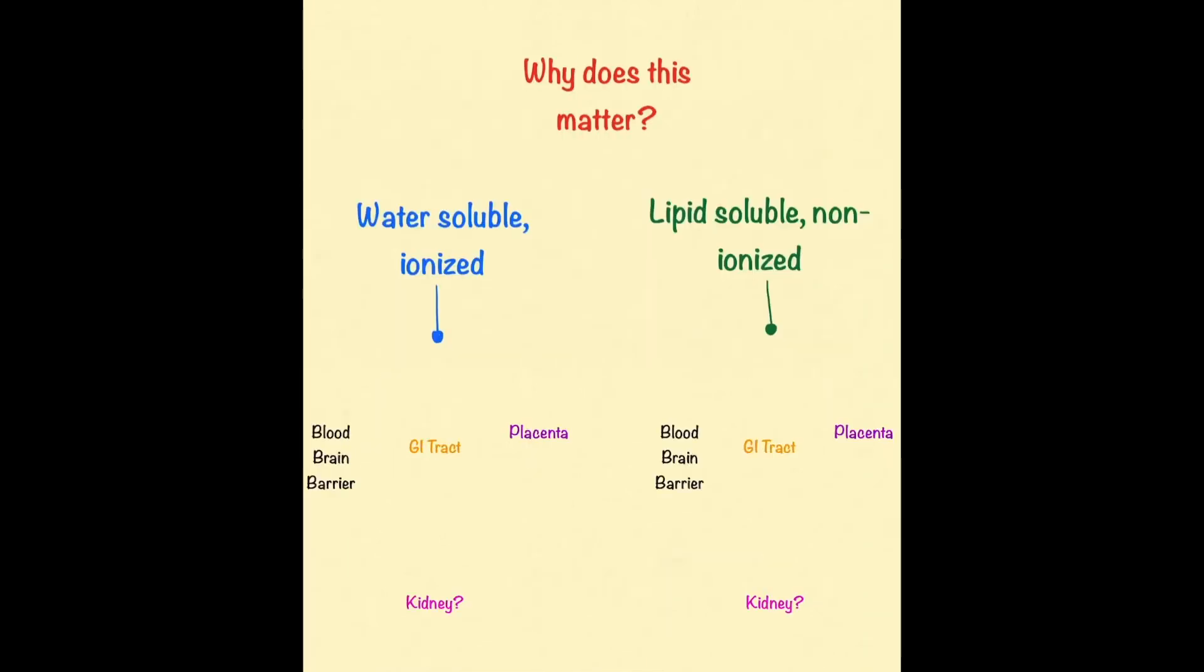Why does this matter? Well, the ionized part of drugs are water-soluble and inactive. These water-soluble portions cannot diffuse over the blood-brain barrier, GI tract, or placenta. So in essence, ionized drugs don't have any of their pharmacological effects. However, they are more likely to be excreted by the kidneys than their lipid-soluble counterparts.